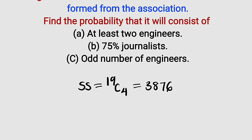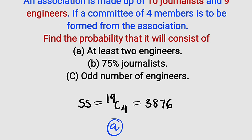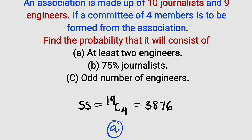Now let's start with Part A. We are asked to find the probability that at least two engineers will be included, which means that we could have two engineers, three engineers, or even four engineers, because 'at least' means greater than or equal to.